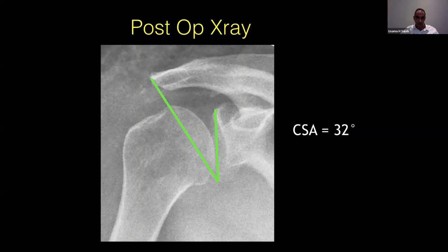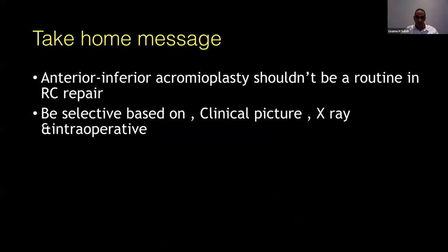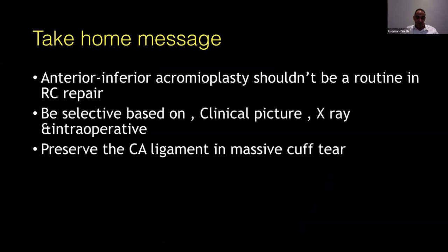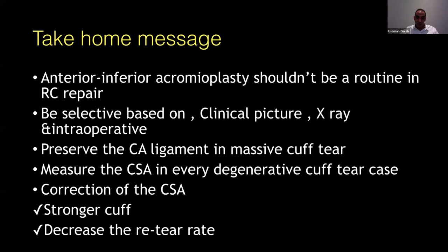My take-home messages: antero-inferior acromioplasty should not be performed routinely in all cases of rotator cuff repair — be selective based on clinical findings, X-ray, and intraoperative confirmation. It is very important to preserve the CA ligament and avoid acromioplasty in patients with massive cuff tears, whether repairable or irreparable. Try to measure the critical shoulder angle on every degenerative cuff tear preoperatively on a true AP view — if you correct it, you will get a stronger cuff and decrease the retear rate. Thank you.